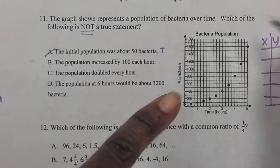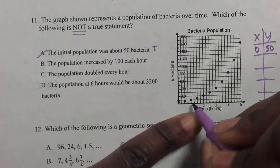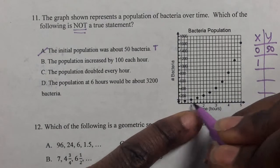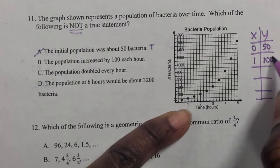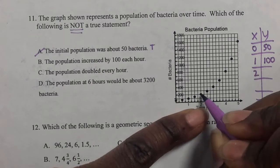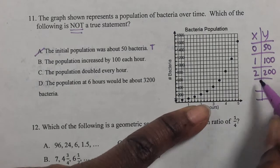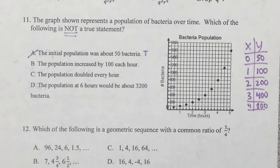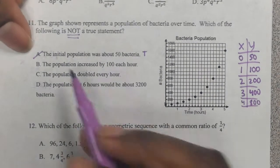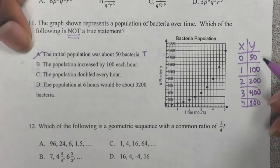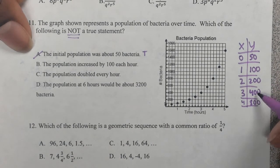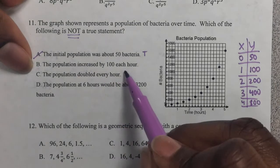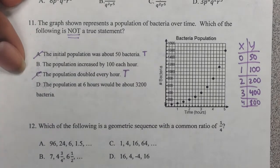All right, let's go ahead and make a table. So 0, 50 would be the first one. Then at the 1 would be 100. Then at the 2 would be 200. Then at the 3 would be 400. Then at the 4 would be 800. This table really helped me. I should have made the table before I even started the problem. Because if you look, it is doubling each time. So the population doubled every hour. That is true. We're not looking for a true. We're looking for a false.